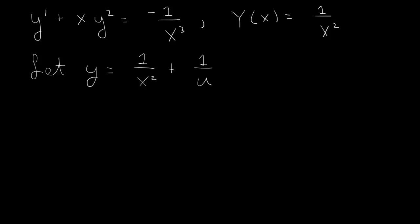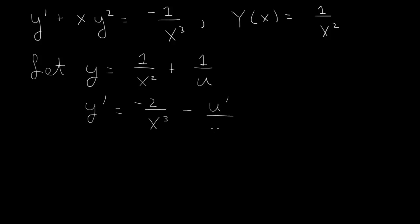So if we take the derivative of this, we have y prime. This is x to the minus 2, so minus 2 over x cubed. And the derivative of 1 over u is the derivative of u to the minus 1, which is minus u to the minus 2 times the derivative of u. So that's minus u prime over u squared.